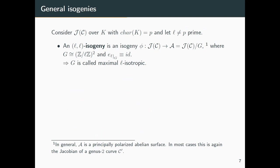An ℓ-isogeny is an isogeny between two abelian surfaces (not only Jacobians) where the kernel group is of the form (ℤ/ℓℤ)². This is comparable to the elliptic curve case where the kernel is a cyclic group of order ℓ — here we just have a rank 2 group instead. An additional important property is that the Weil pairing restricted to this group must be trivial. This condition doesn't visibly appear for elliptic curves because it's automatic for cyclic groups.